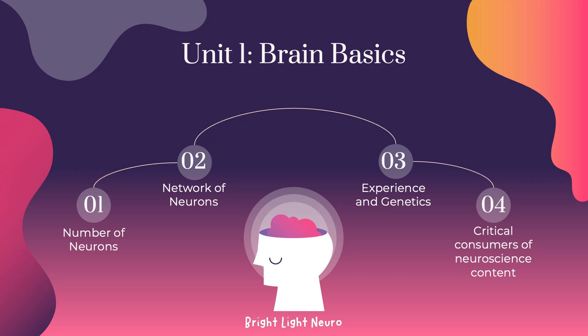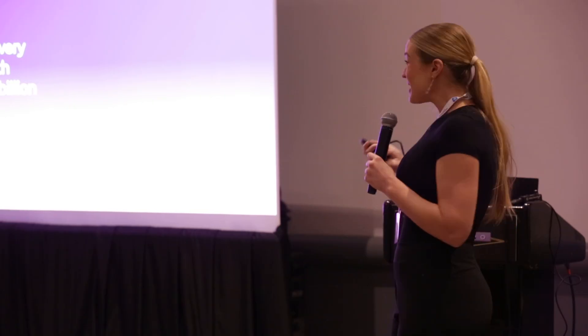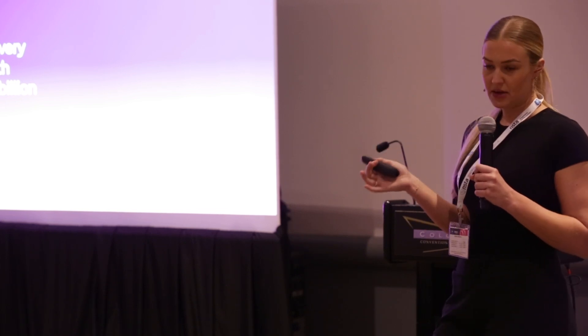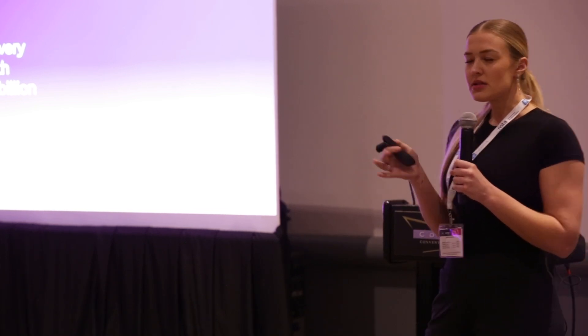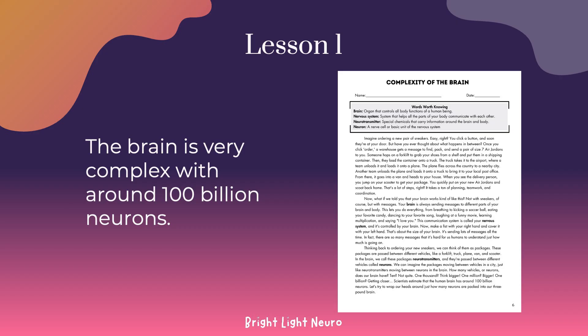Lesson one begins by teaching students that the brain is really complex, with around 100 billion neurons. The number is more probably 86 billion, but for the sake of this activity we use 100 billion.